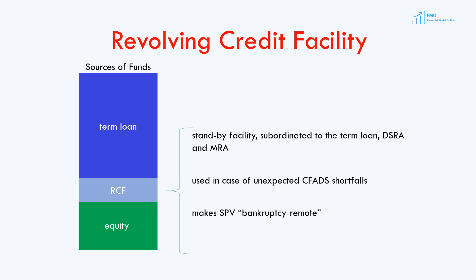The revolver is often structured with a cash sweep provision. This means that any excess cash flow after servicing the term loan, debt service reserve account, and maintenance reserve account will be used by the bank to pay down the outstanding balance of the revolver. Furthermore, if in any period there is insufficient cash to pay the revolver's interest expense, that interest expense is rolled over — in other words, the interest expense is added to the revolver's outstanding balance.